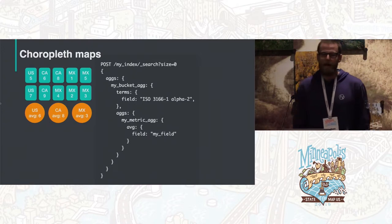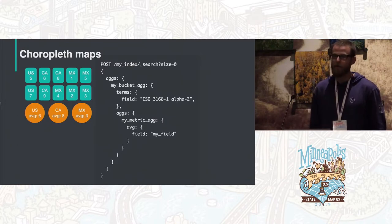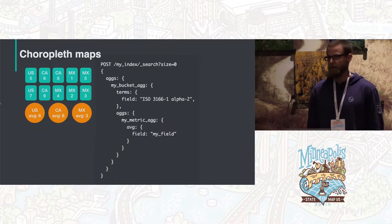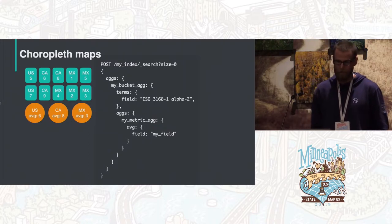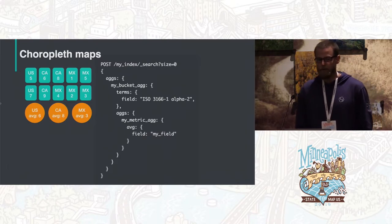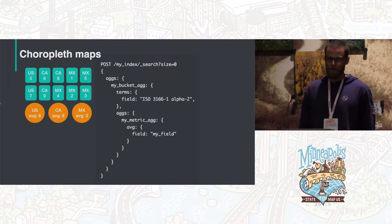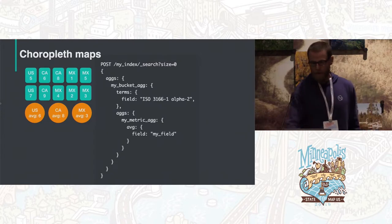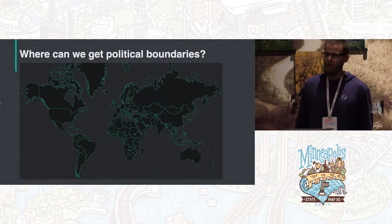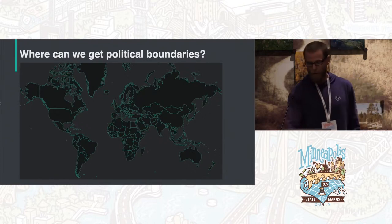Using ingest processors, if we're analyzing logs with an IP address, we can look up that IP address to get a geospatial location and also an ISO 2 country code for where the log originated or ended up. This gives us a data set tagged with ISO 2 country codes, and we can run a terms aggregation to see metrics for all documents that originated in the United States, Canada, Mexico, and so on. This raises the question: where do we get the polygons to merge this data with, so we can show a nice polygon of the United States rather than just the text 'US'? That's where OSM comes in.